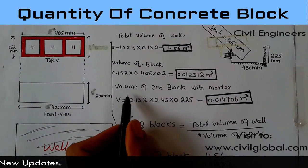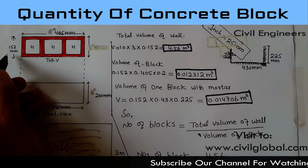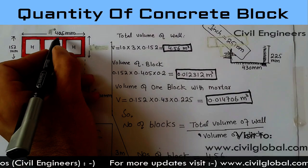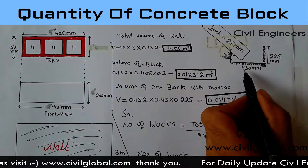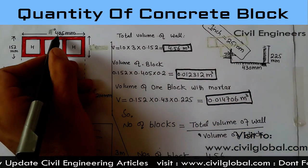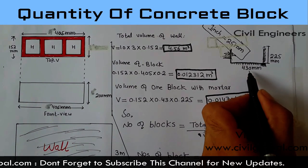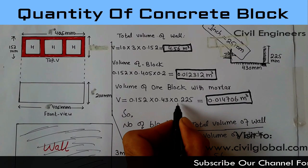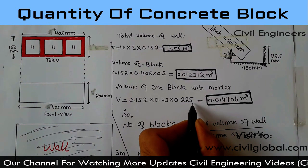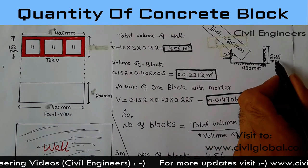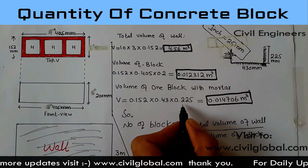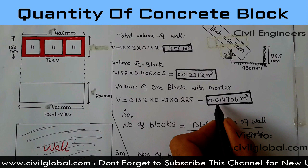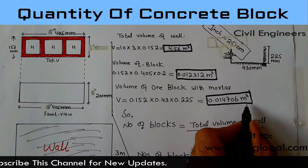Volume of one block with mortar: V is equal to 0.152 meter × 0.430 meter (because 405 mm + 25 mm = 430 mm, divided by 1000 gives 0.430 m) × 0.225 meter (225 mm ÷ 1000). When you multiply these three values, the volume of one block with mortar equals 0.014706 cubic meters.